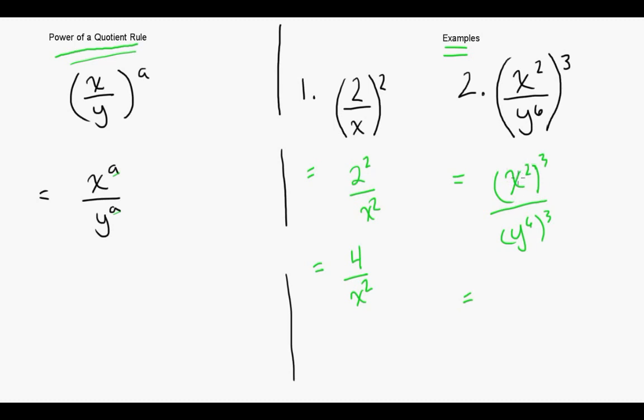Remembering our product rule now, x squared to the 3 is just x to the 2 times 3 so x to the 6, and y to the 6 to the 3, that's just y to the 6 times 3 and that's going to give us y to the 18.